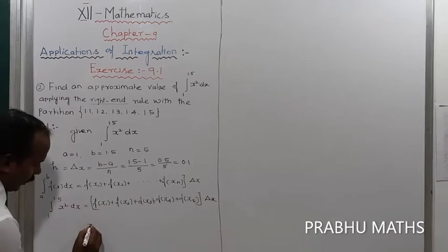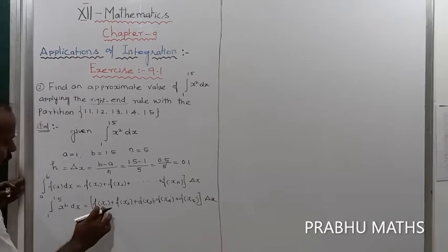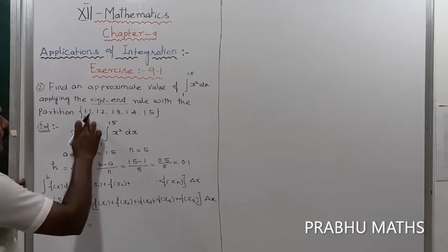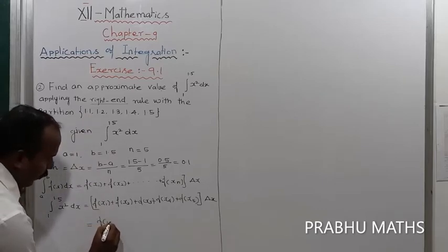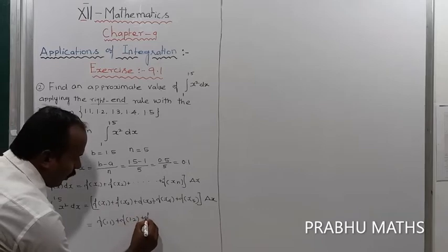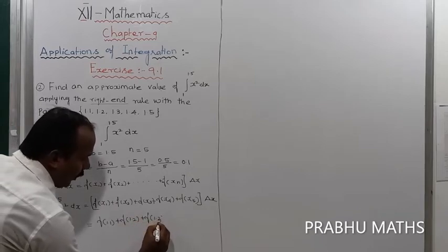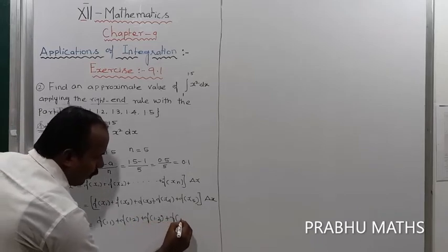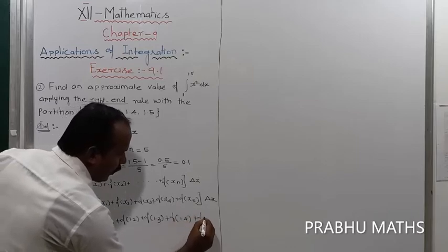Next, f of x1. x1 equals 1.1, so f of 1.1 plus f of 1.2 plus f of 1.3 plus f of 1.4 plus f of 1.5.